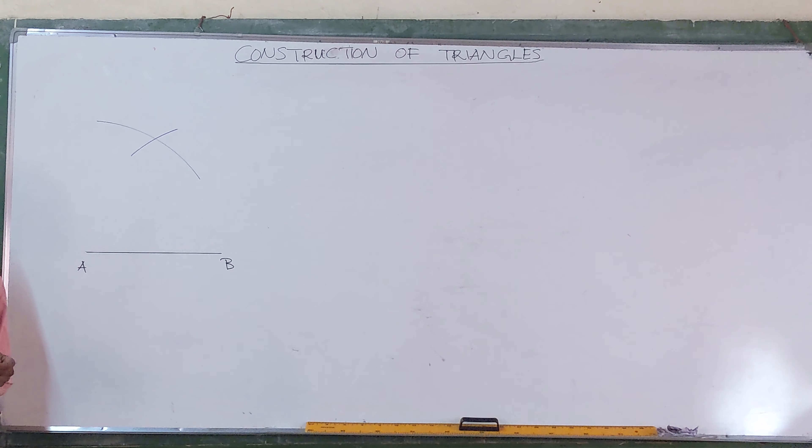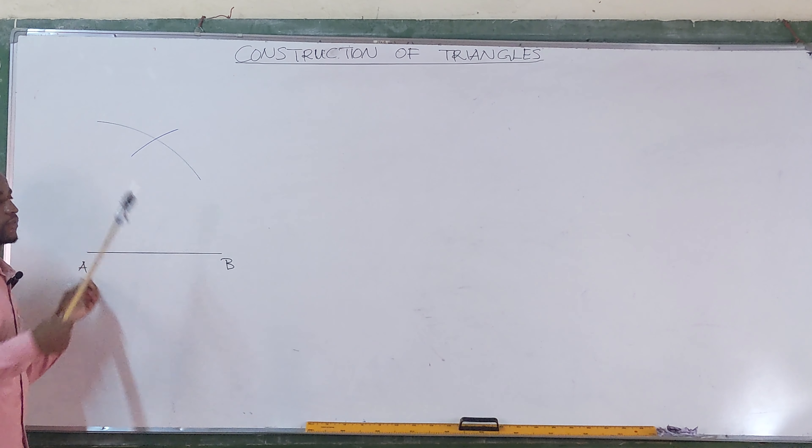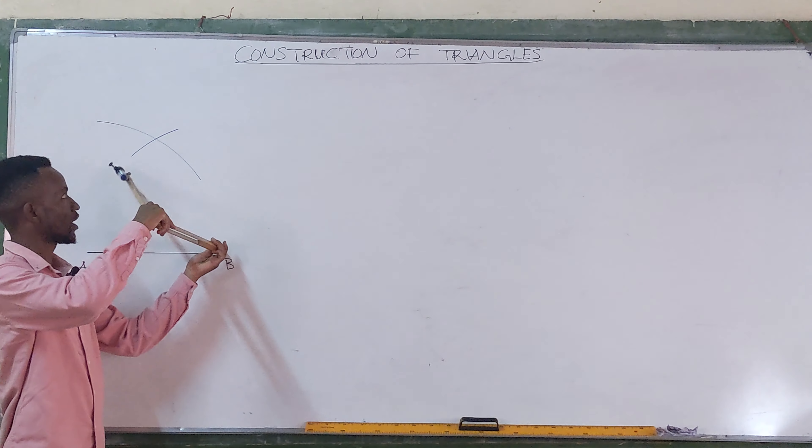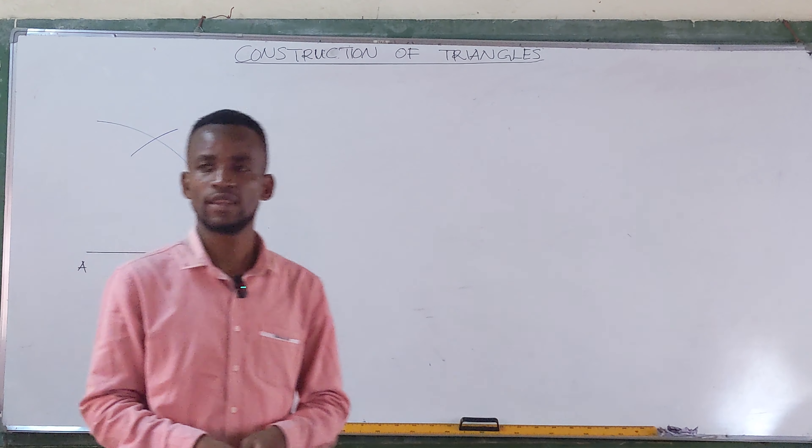So I was saying, you draw your line AB equal to the given length. After drawing your line AB, you get your compass, open to that same given length, which is 65 in our case. And then place your compass at point A, strike an arc, go to point B with the same radius, strike another arc like that. Where the two arcs intersect, that is your point C.